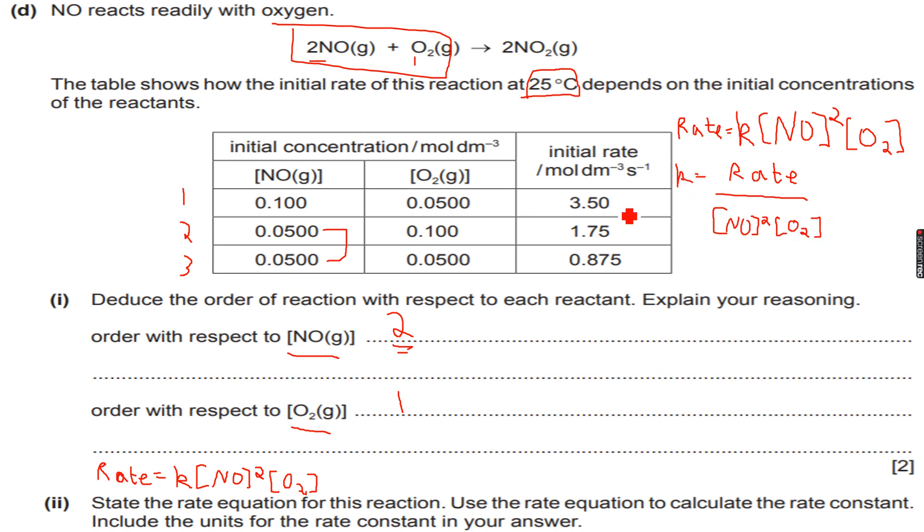So this is the value of k. We can actually use any of these experiments to calculate the value of k because it will be the same in each case. k is a constant. It will be the same. So let's use experiment 1.